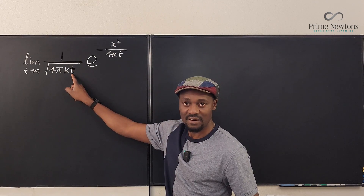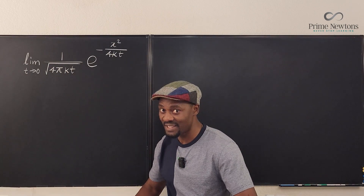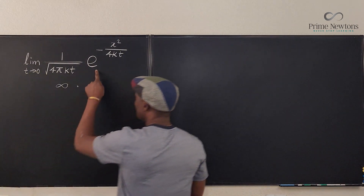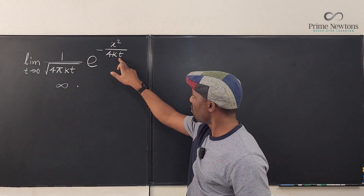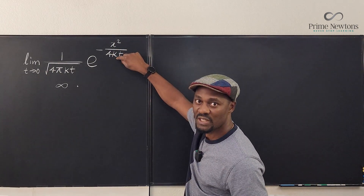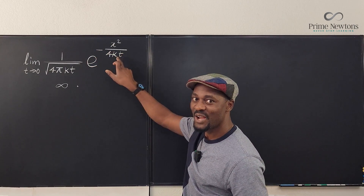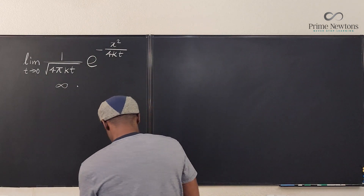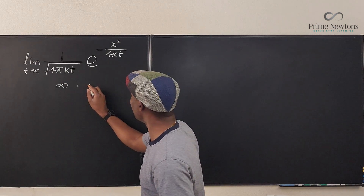Plugging zero into this function: the bottom becomes zero because of the t term, so you have one over zero, which is infinity. Now the other function, e to the negative x squared over 4kt — if we plug in zero for t, the bottom becomes zero, so the exponent goes to negative infinity, which means the expression goes to zero. So you're multiplying infinity by zero.